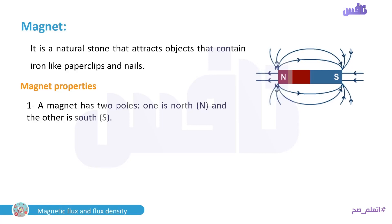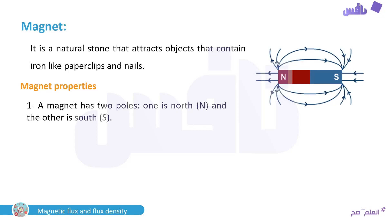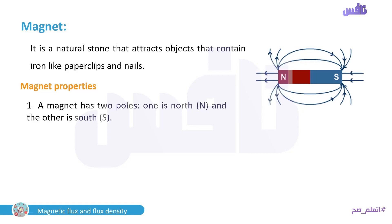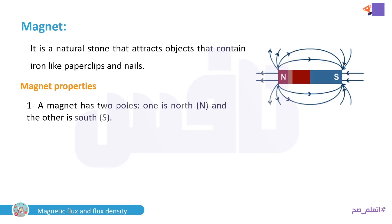Each magnet consists of north and south poles. The direction of magnetic flux lines goes from north to south externally, but internally the direction is from south to north. Pay attention to this information.